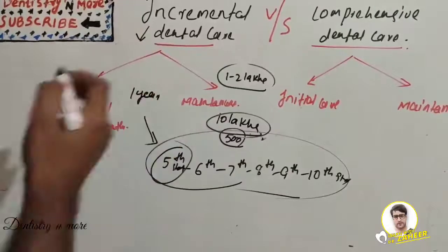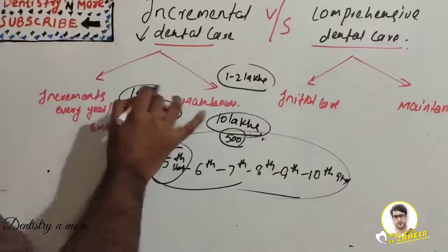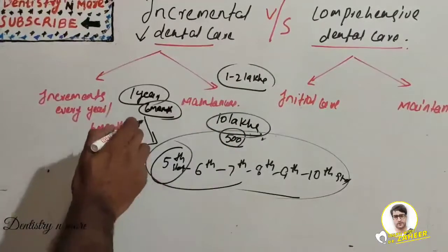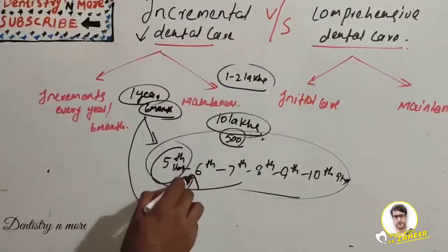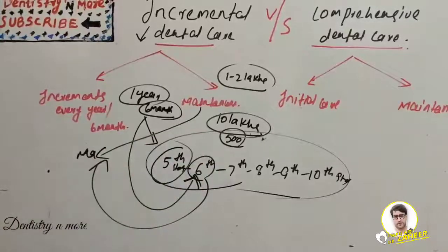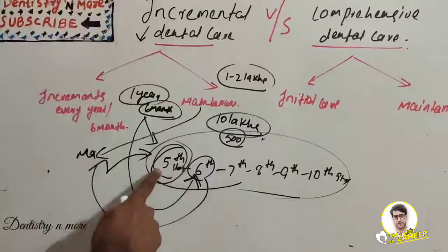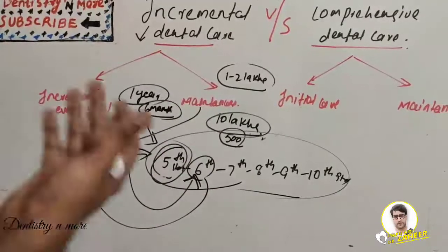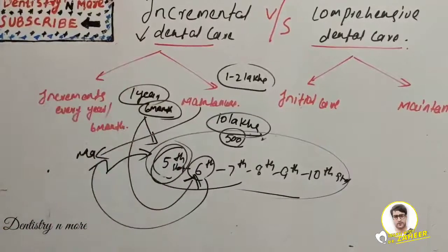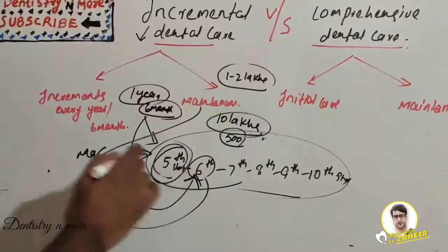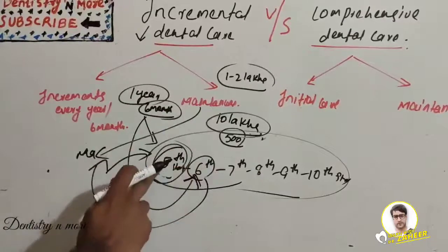We don't have enough money to treat all classes at once, so starting from the earliest class gives us the advantage. In public programs, a cycle is usually around one year; in private settings, it is on a six-month basis. So in the first cycle, we go to the fifth standard with the available money and provide treatment. In the next year, we take up the sixth standard, but we also provide maintenance care to the previous fifth standard students who are now in sixth standard.